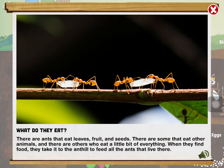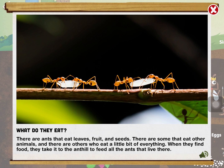There are ants that eat leaves, fruit, and seeds. There are some that eat other animals. And there are others who eat a little bit of everything. When they find food, they take it to the anthill to feed all the ants that live there.